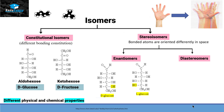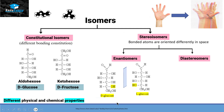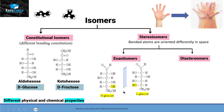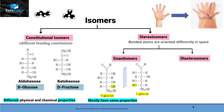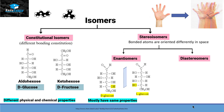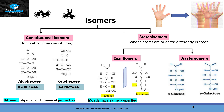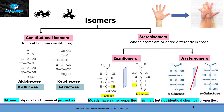Enantiomers are compounds that are mirror images of each other. For example, D-glucose and L-glucose are still glucose, but their orientation is different in space and they are exact mirror images. That is why they fall under enantiomers, and most of their physical and chemical properties are the same — only optical properties differ. Diastereomers, on the other hand, are compounds with the same functional group and same number of carbon atoms but are not mirror images of each other, so they have similar but not identical chemical and physical properties.